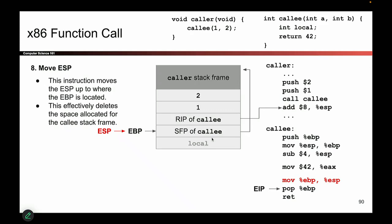Now let's take EBP and move it back to its original place. Where did I put the original value of EBP? That's what we put on the stack — this value on the stack just so happens to be the old value of EBP. So all I have to do is take those bits, the old value, and stick it back in the EBP register.